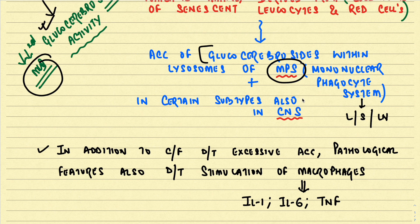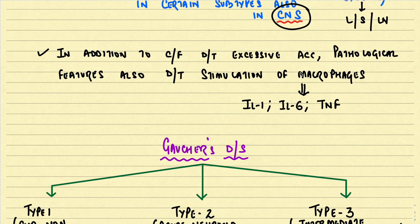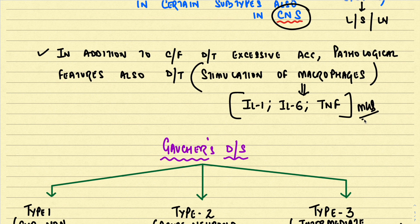Glucocerebroside also accumulates within the lysosomes of the central nervous system in certain subtypes of Gaucher's disease. Additionally, pathological features arise not only from excessive lysosomal accumulation but also from stimulation of macrophages, which release cytokines including interleukin-1, interleukin-6, and tumor necrosis factor — a very important additional finding.